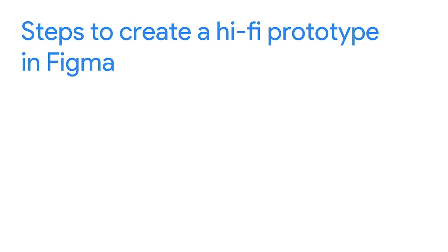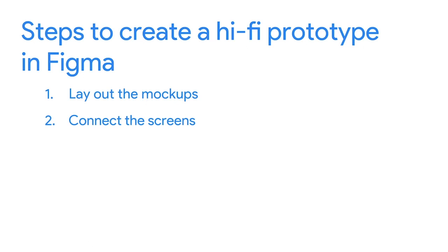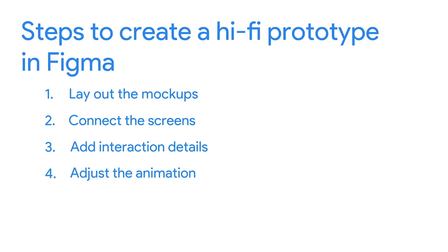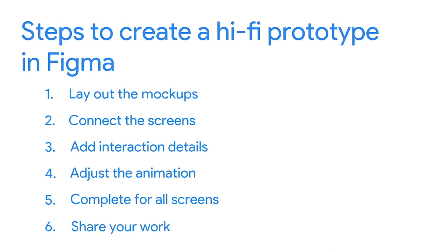Ready to cover the next four steps to create a high-fidelity prototype in Figma? As a refresher, the six steps to create a high-fidelity prototype are: lay out the mock-ups, connect the screens, add interaction details, adjust the animation, complete for all screens, and share your work. We already learned how to lay out the mock-ups and connect the screens. Now it's on to step three, which is adding interaction details.